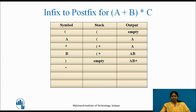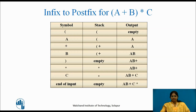The next symbol is '*' — we push it onto the stack. The output remains 'a, b, +'. The next symbol is 'c' — as it is an operand, it is sent to the output, so the output is 'a, b, +, c'. We have reached the end of the input, so we pop all elements from the stack and place them in the output. The output becomes 'a, b, +, c, *'. The stack is empty. The final postfix expression is a b + c *.